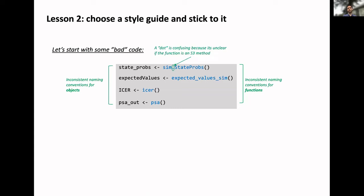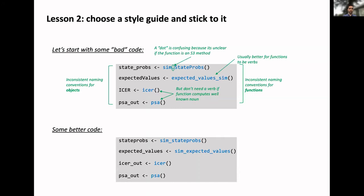There are some other things we might not want to do. In base R, there's sometimes dots in the function, which is confusing because a dot can also represent an S3 method in R. If we see sim.stateprobs, that might just be a function called sim.stateprobs, or it might be a function called sim that has a specific method for an object called stateprobs. It's confusing. I think it's generally better for functions to be verbs. For example, instead of expected value sim, it's better to say sim expected values. Of course, there's idiosyncrasy. If you have a well-known noun like icer, you can just have a function called icer. In base R, you don't have compute mean, there's just a function called mean. Here's an example of some arguably better code. But again, the main point is to stick to a consistent style, not the particular style that you choose.